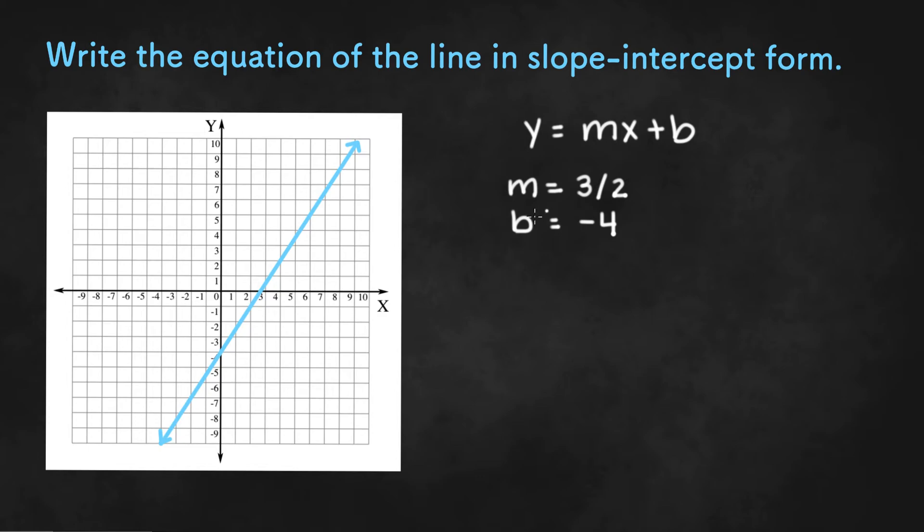Or we can use the slope formula. If we want to use the slope formula, we need to find 2 points on the line. We could use the y-intercept as one point, and we could use a point like 4, 2.